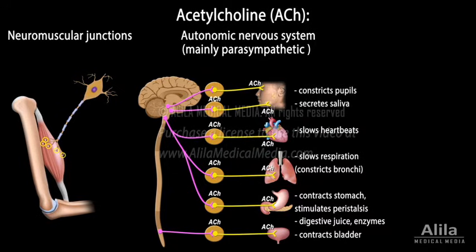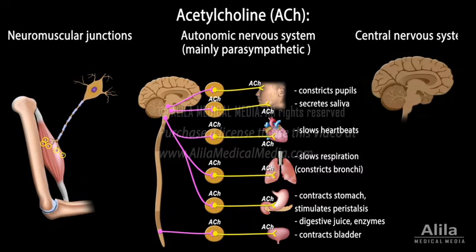Acetylcholine is also active in several brain regions associated with cognition and movement. A neuron that uses mainly acetylcholine as its neurotransmitter is called a cholinergic neuron.